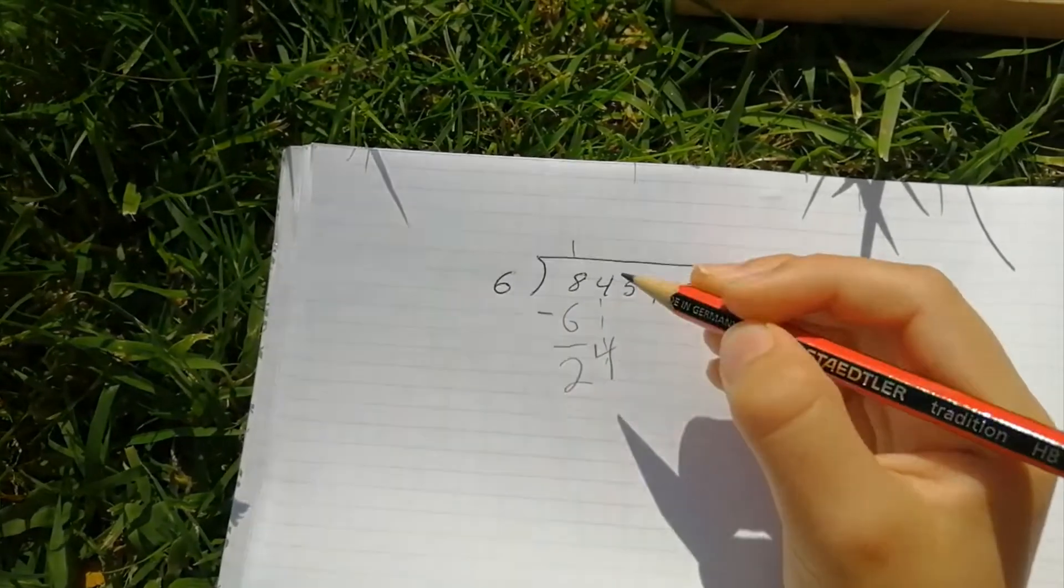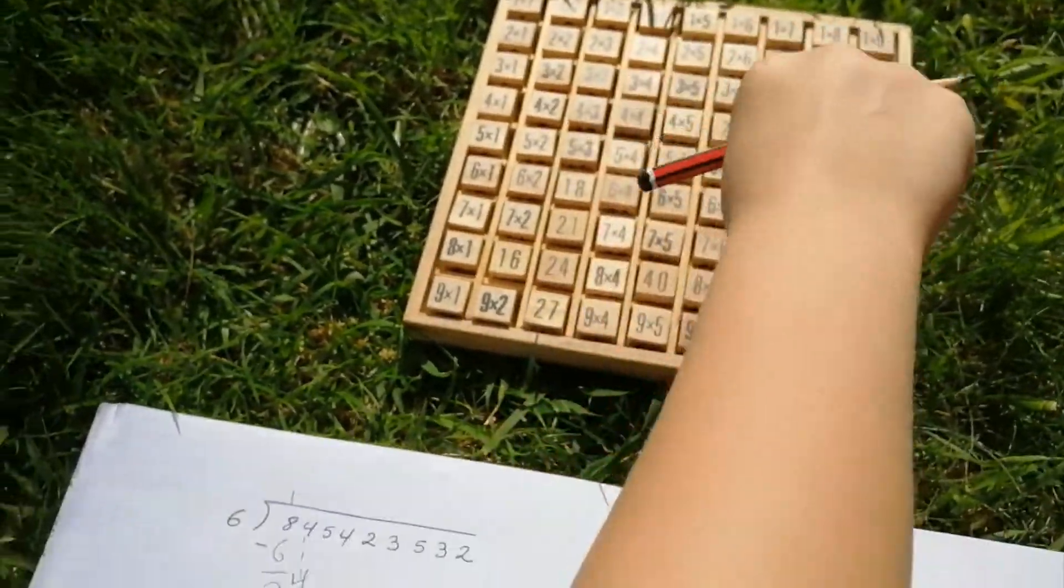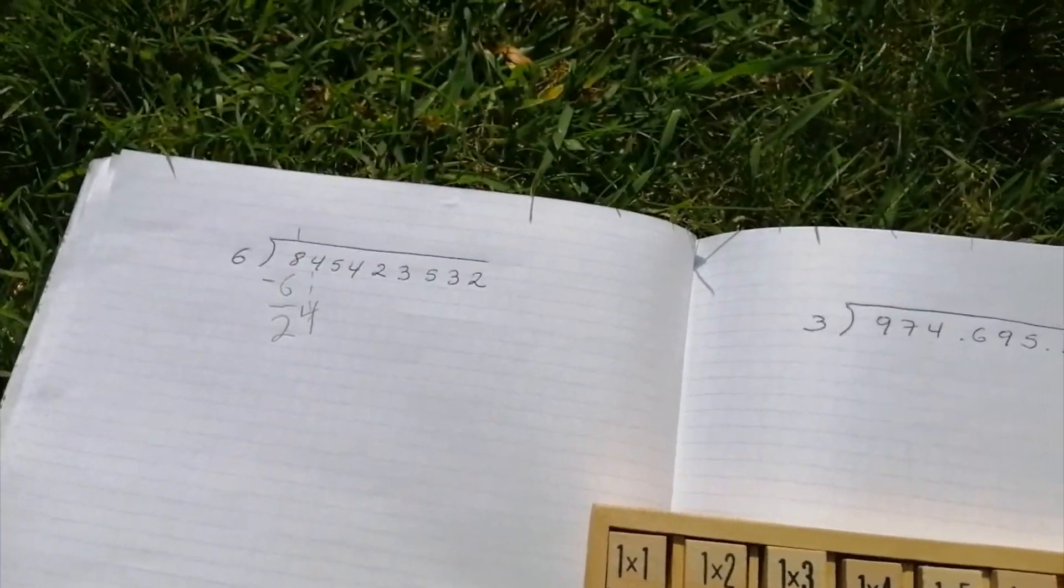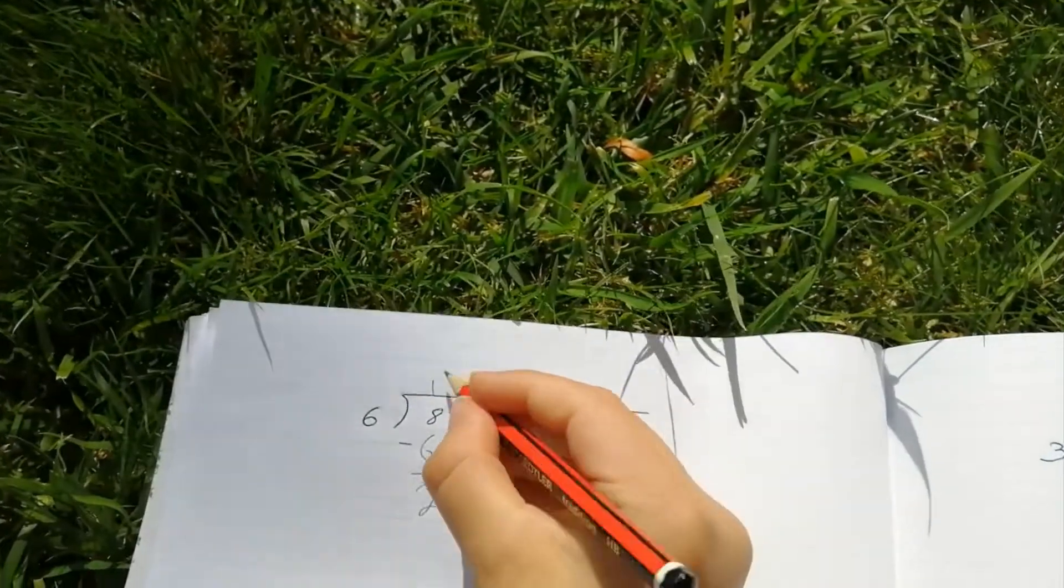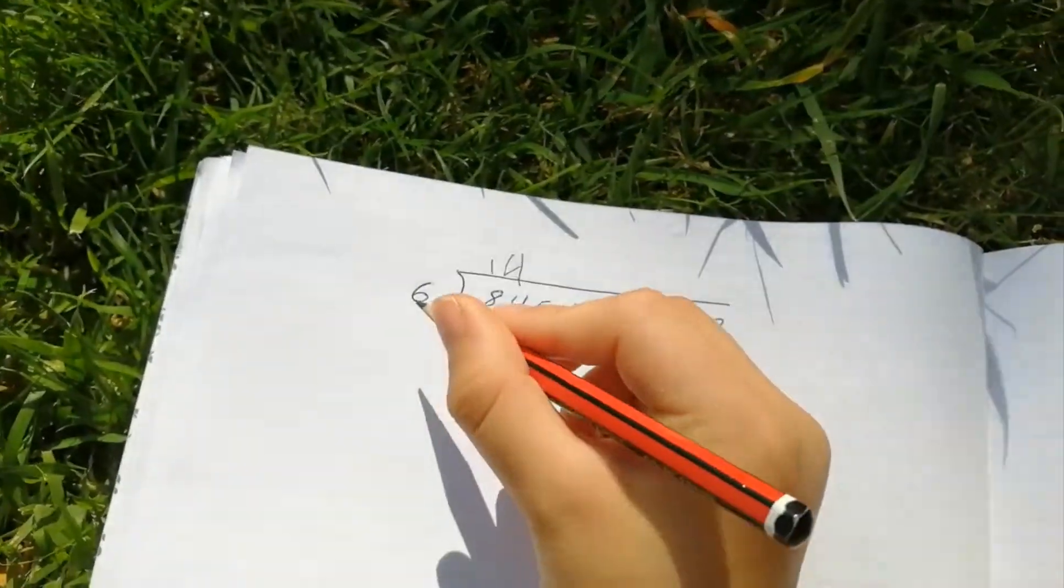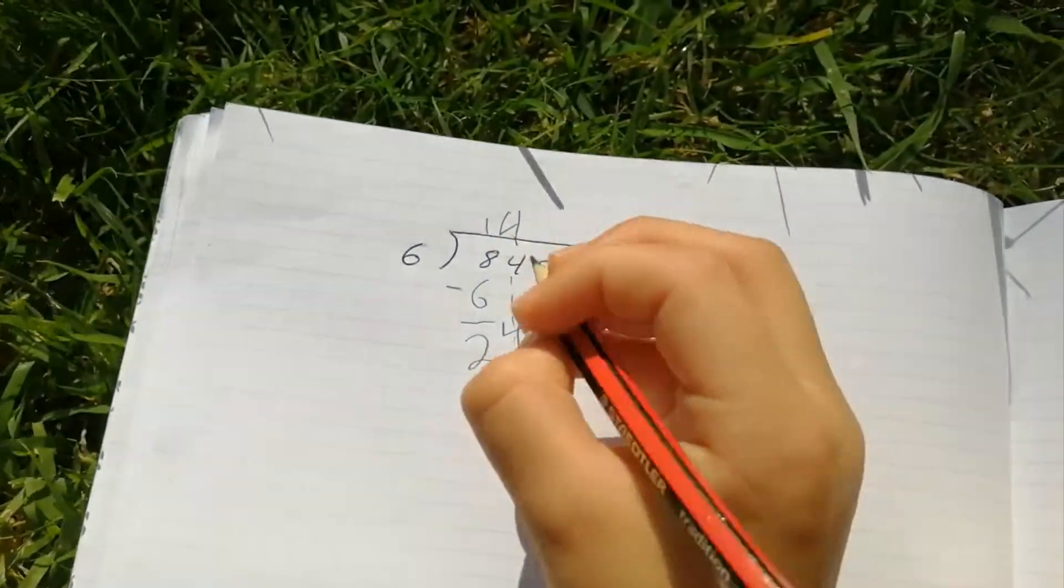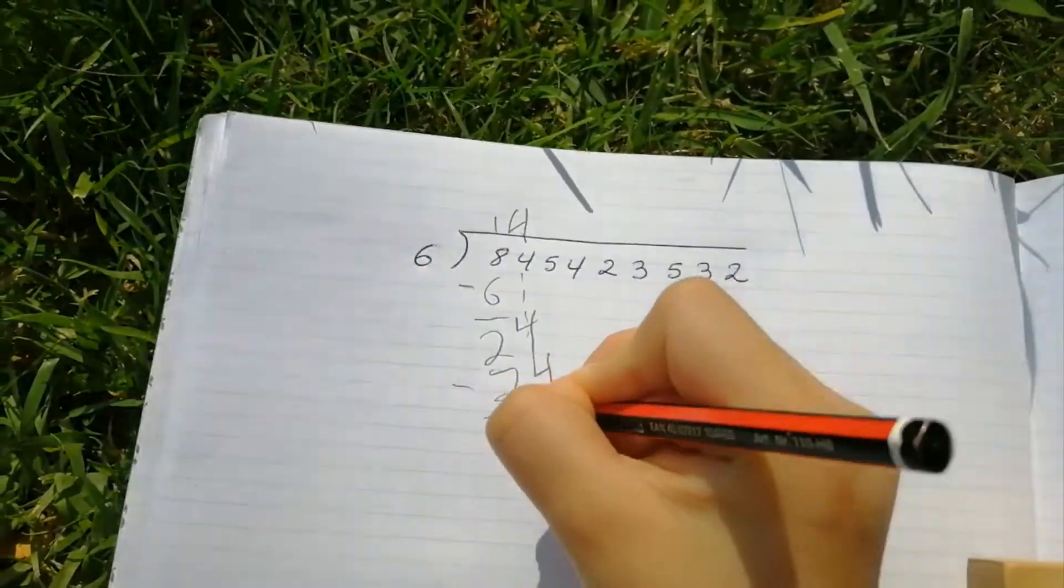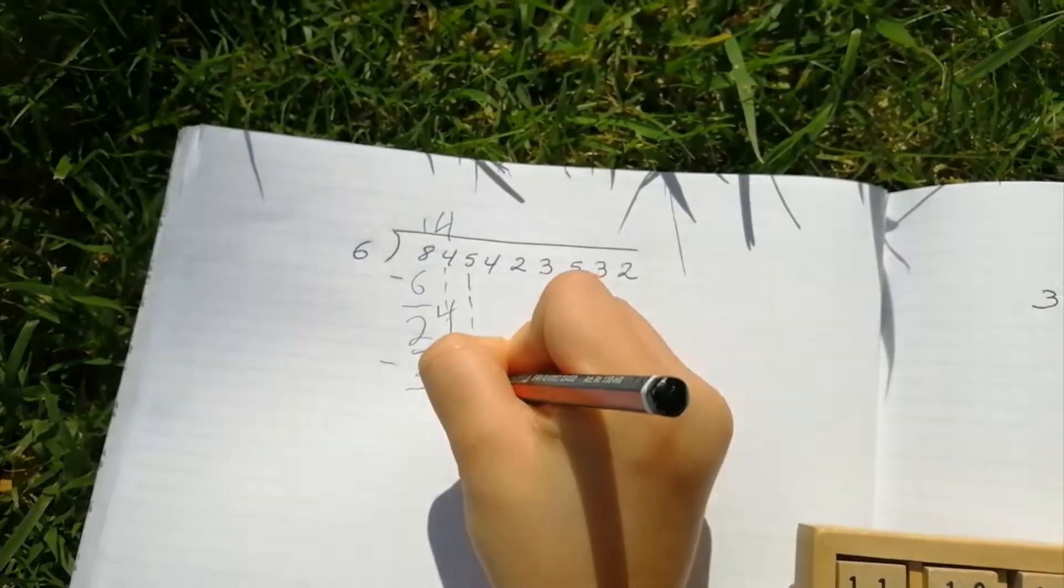And six. How many sixes are in twenty-four? That is four. So put four here. And six times four is twenty-four. So put minus twenty-four equals zero.